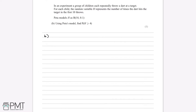There are different ways to solve this depending on the type of calculator you have. Using the distribution where H is binomial with N = 10 and P = 0.1, some calculators can find P(H ≥ 4) directly - by entering a lower bound of 4 and upper bound of 10 in the binomial distribution option.